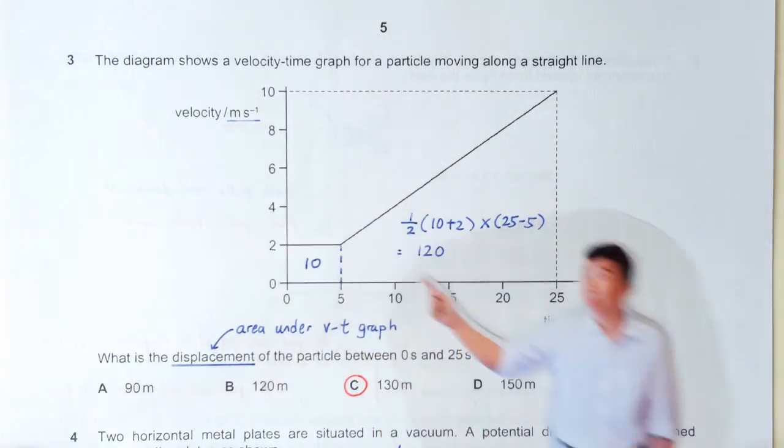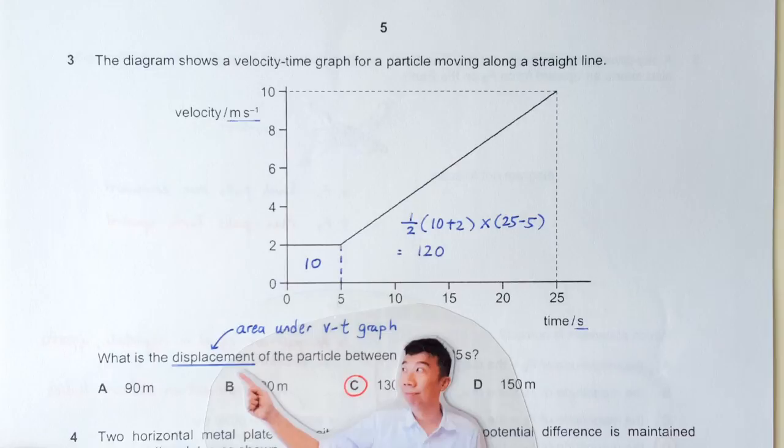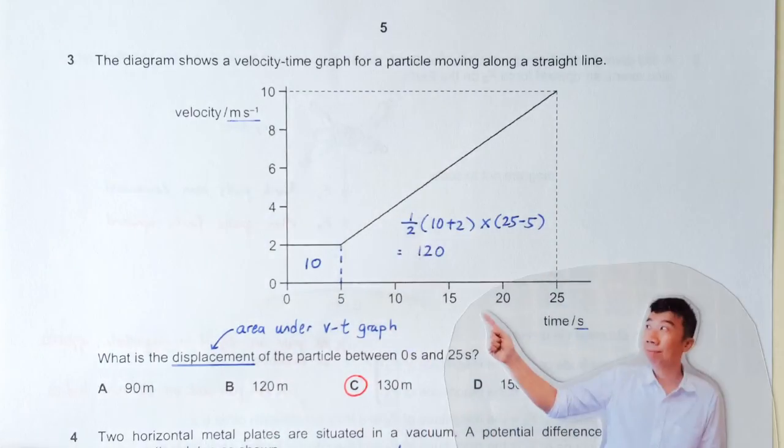Okay, if we are given the velocity time graph, how do we get the displacement? It's the area under the VT graph, of course.